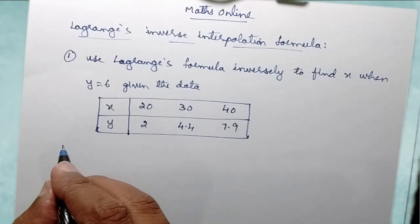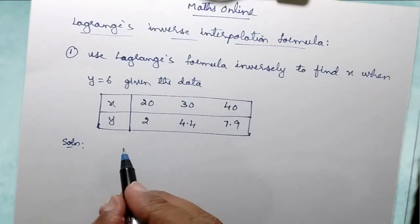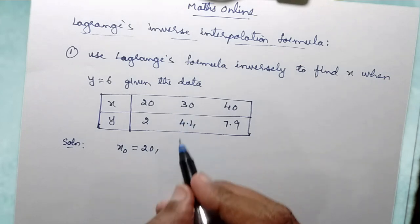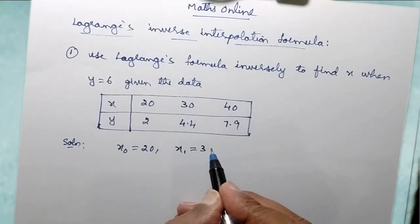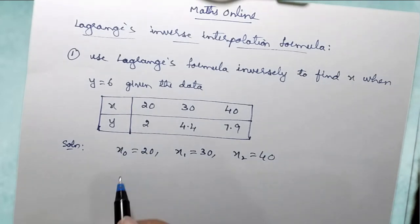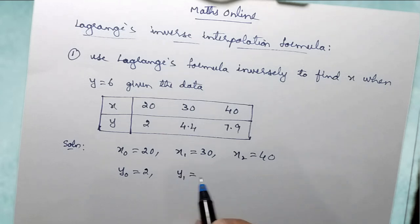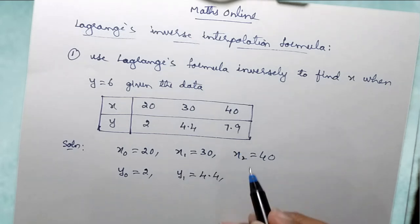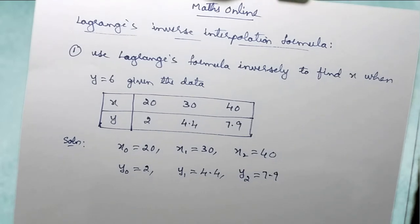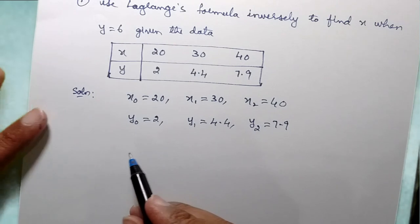So let us take the first example. We will use Lagrange formula inversely to find x when y is given. Whenever you want to find out x value when the value of y is given, we have to use the Lagrange inverse interpolation formula. So let us see what data is given: x0 = 20, x1 = 30, x2 = 40; corresponding y values are y0 = 2, y1 = 4.4, and y2 = 7.9. Because you have to use inverse interpolation, let us write down the formula.